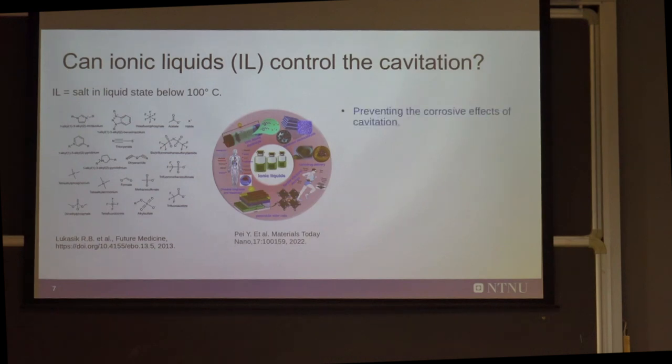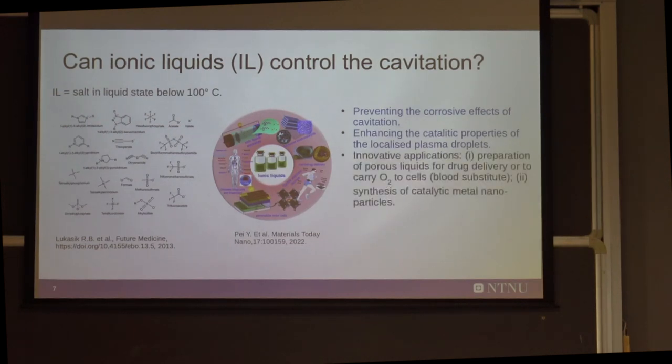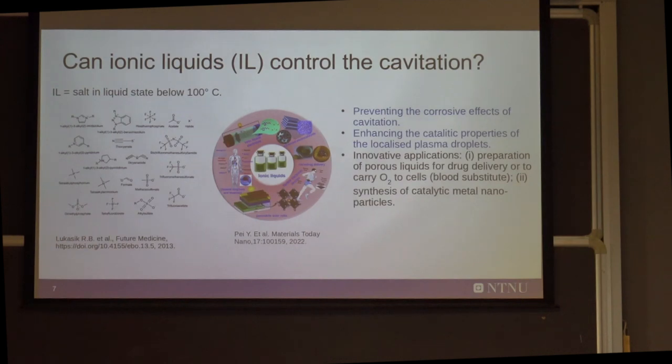So the idea is can we use ionic liquids to change the property of the liquid to prevent the corrosion or even to exploit the corrosion in certain cases or to use the catalytic properties in the plasma region. Or the other idea is really to improve the actual idea of encapsulating drugs and releasing at a certain point in a certain place. And also there is a very high level idea of using this very localized energy to break bonds and to create nanoparticles that are very expensive to create in other ways. So there are many many applications.